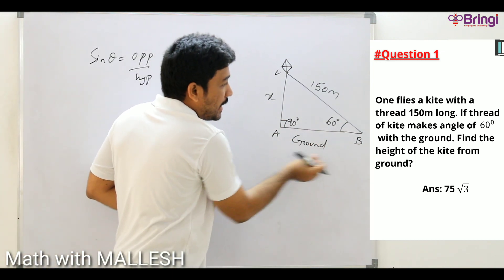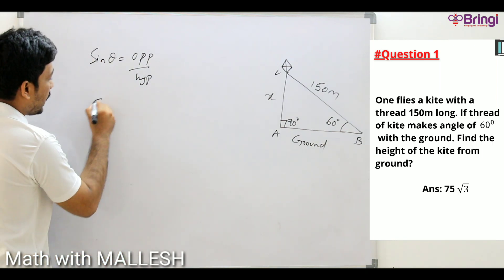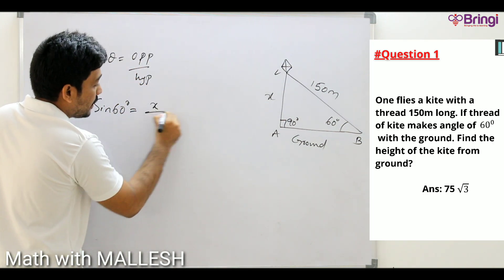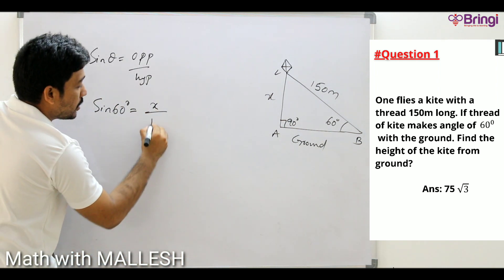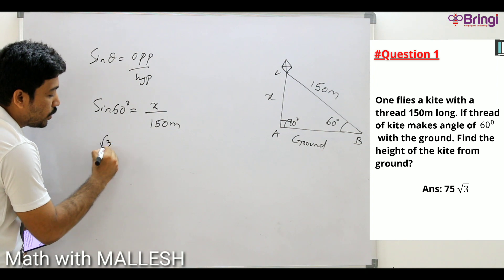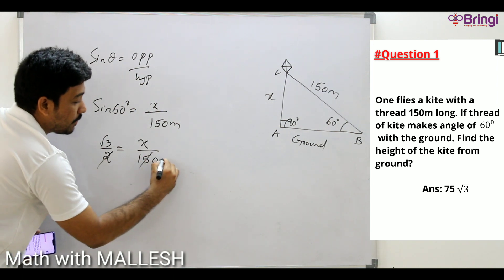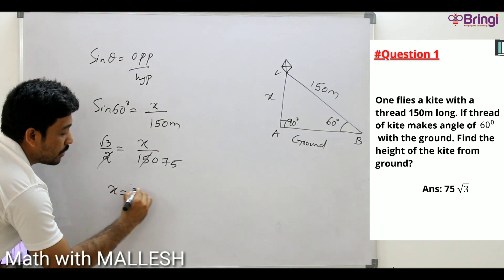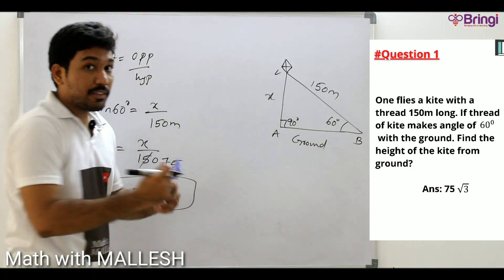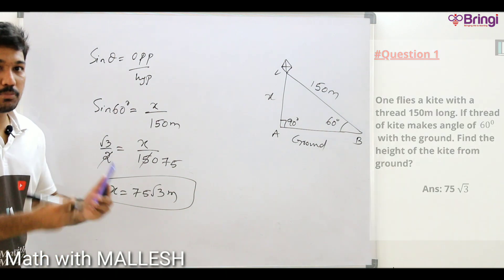No need to write the diagram labels in your examination; I'm just explaining. Now, sin 60° = opposite/hypotenuse = x/150. Since sin 60° = √3/2, we get √3/2 = x/150. Cross-multiplying: x = 75√3 meters. So the height of the kite from the ground is 75√3 meters.